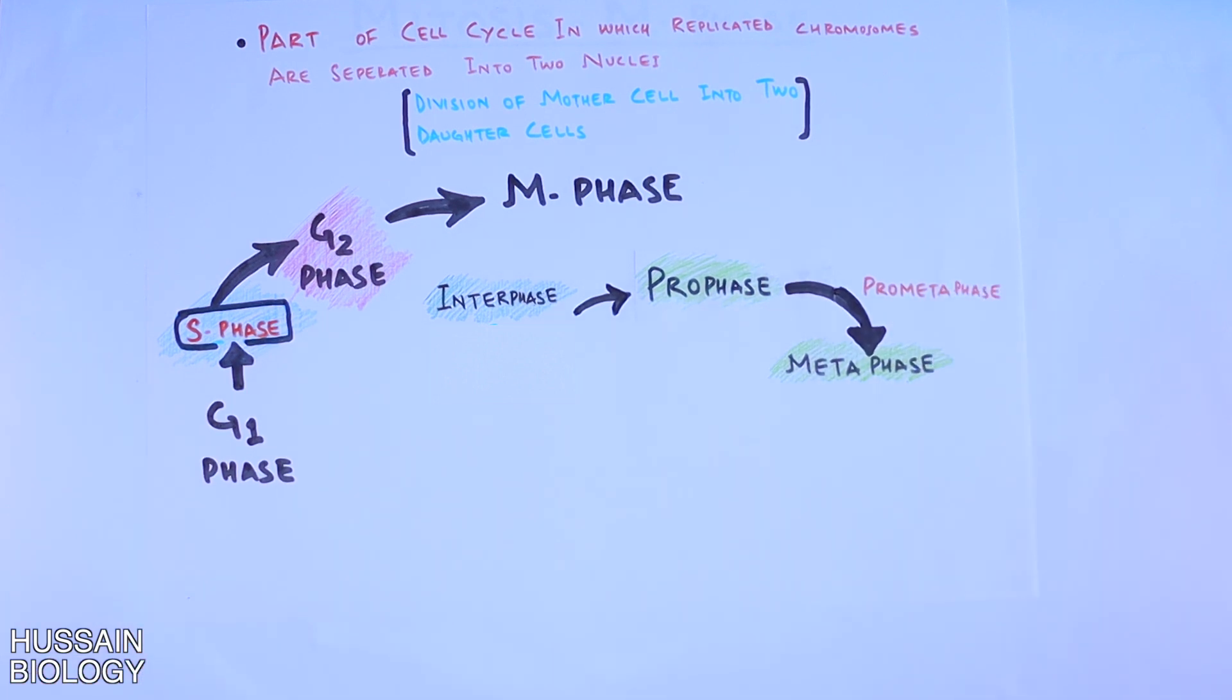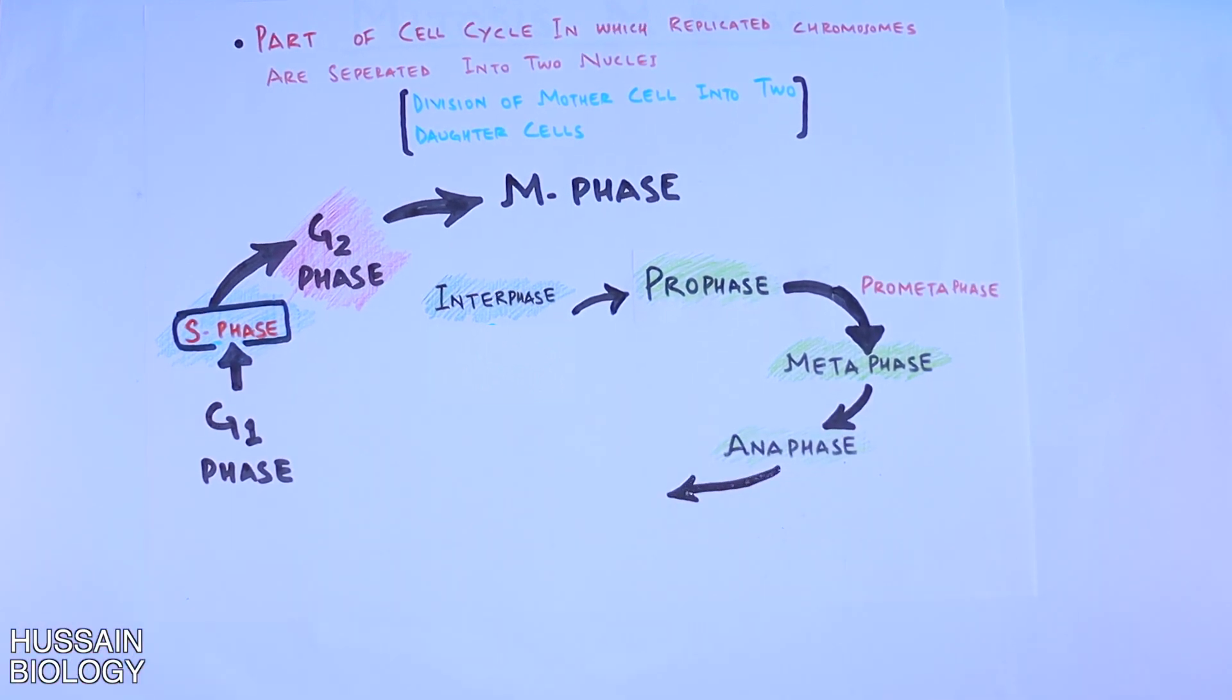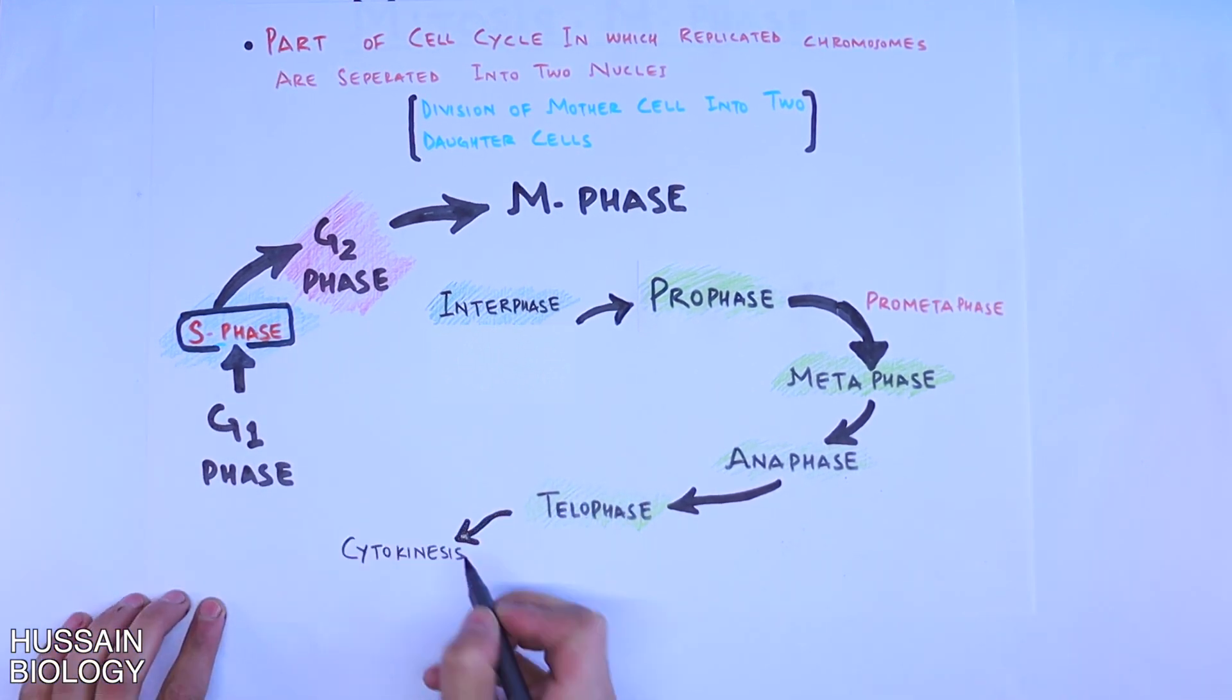Now getting back to metaphase, from here the cell gets into anaphase, and then ultimately we have telophase, which concludes the mitotic phase of the cell cycle. But if we go further, we have cytokinesis after telophase, which completes and restarts the cell cycle again.